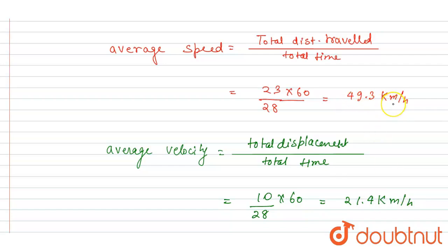So 49.3 kilometer per hour is the magnitude of the average speed and 21.4 kilometer per hour is the magnitude of the average velocity. Thank you.